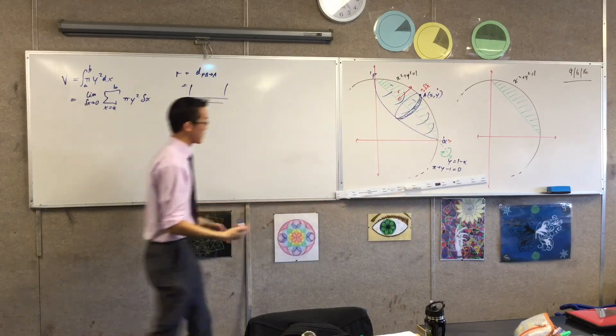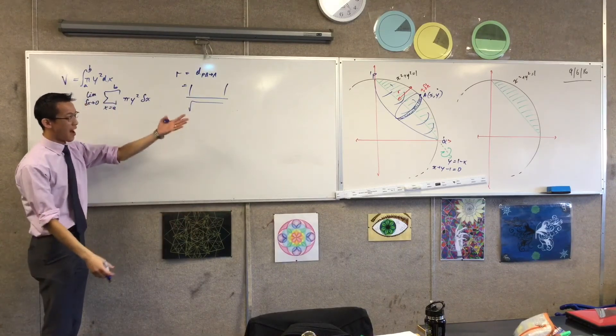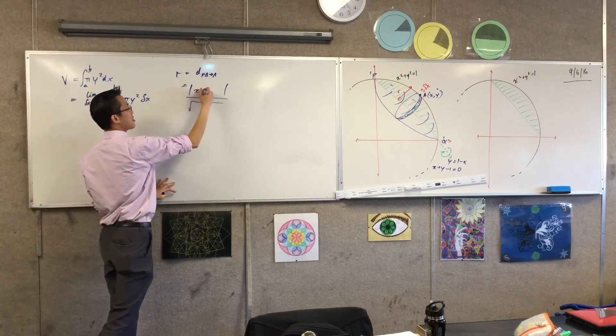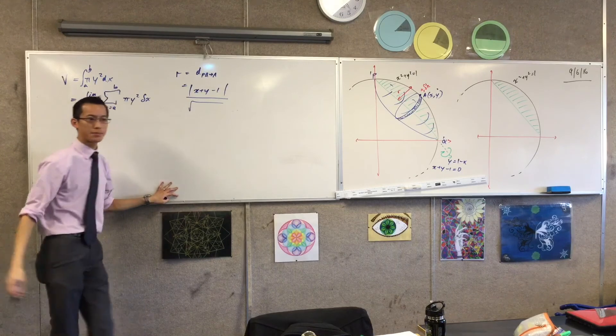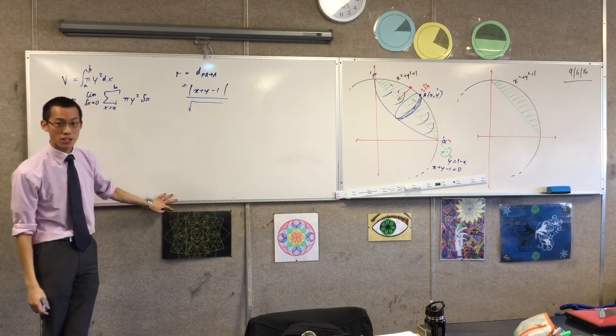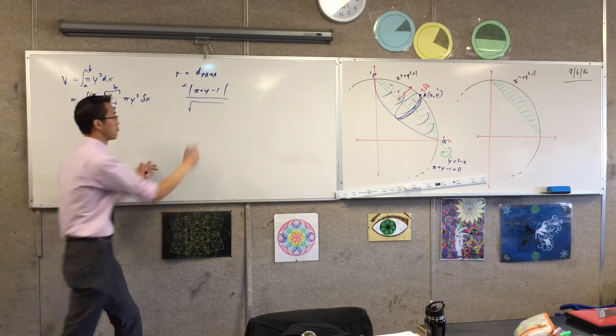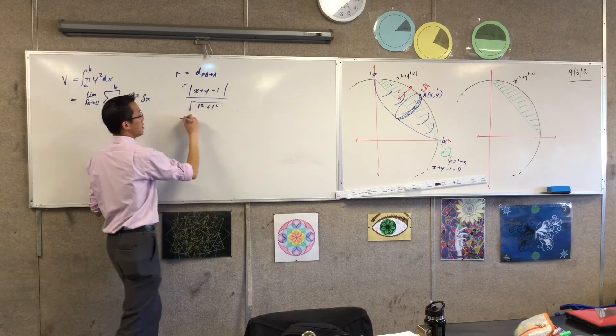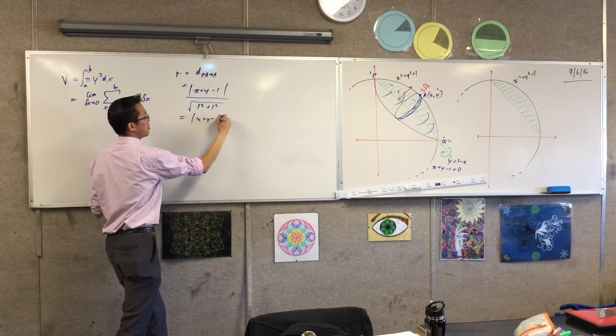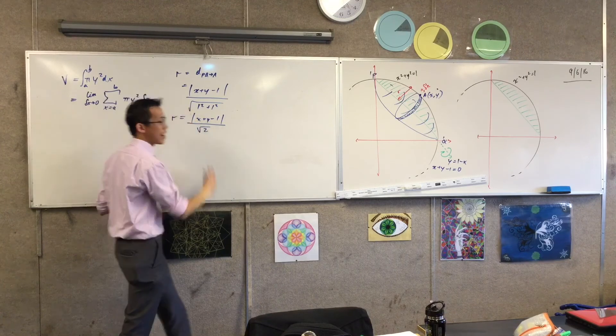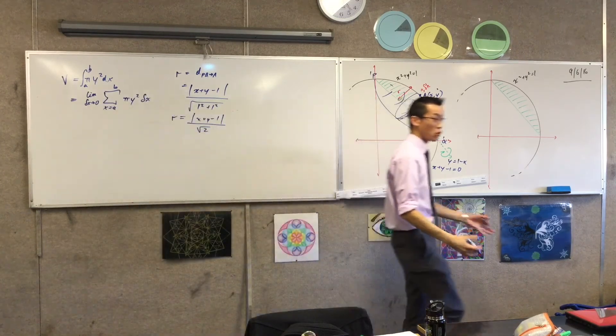It's Ax1 plus By1 plus C. So conveniently for me, because the x and y that I'm going to are x and y, I just have this on my numerator. What about my denominator? Cool. So now I have a radius. I have a radius. Cool.